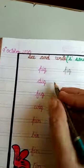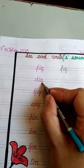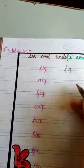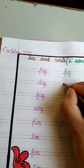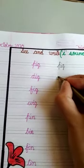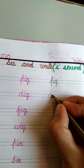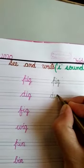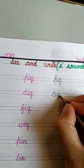Next is da, ig — dig. Write here: da, ig, dig.